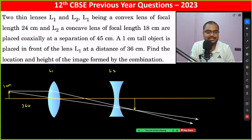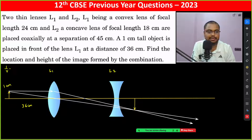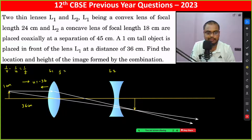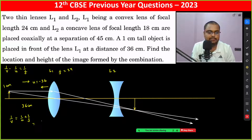The object is at 36 centimeters, so for the first refraction, we use 1/v minus 1/u equals 1/f. Since incident light travels to the right, u is taken as negative, so u becomes minus 36 centimeters. The focal length of the convex lens is positive, so f equals 24. Therefore, 1/v equals 1/u plus 1/f.